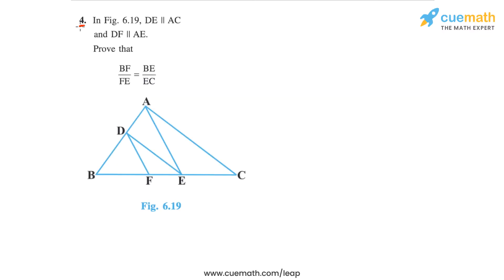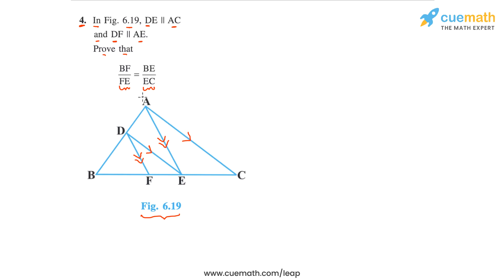In question 4 of this exercise, the problem statement is in figure 6.19. DE is parallel to AC, and DF is parallel to AE. Using this, we have to prove that BF by FE is equal to BE by EC. Observe this ratio in the figure carefully.